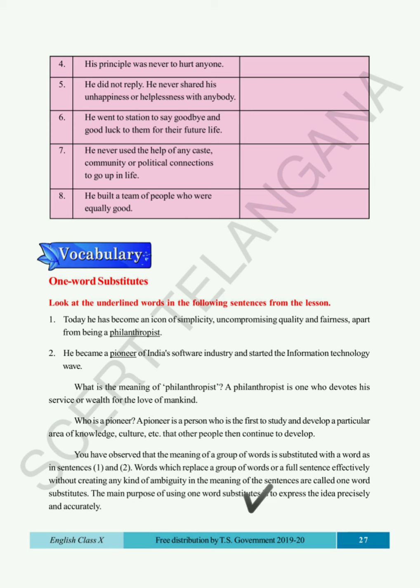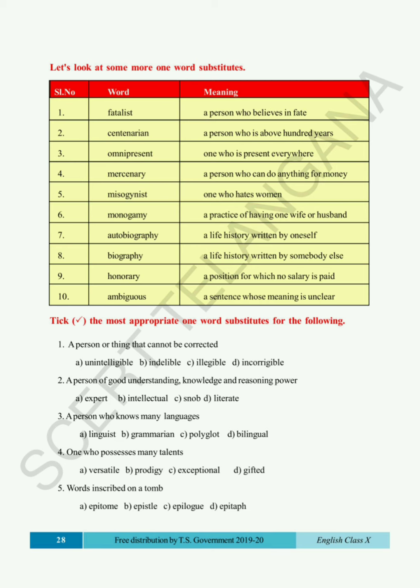The word is given and the meaning for what we are substituting is also given. The first one is 'fatalist' — a person who believes in fate is called a fatalist. The one word substitute for a person who believes in fate, meaning in luck, is fatalist. This list you have to remember. The second one is 'centenarian' — a person who is above a hundred years old is called a centenarian.